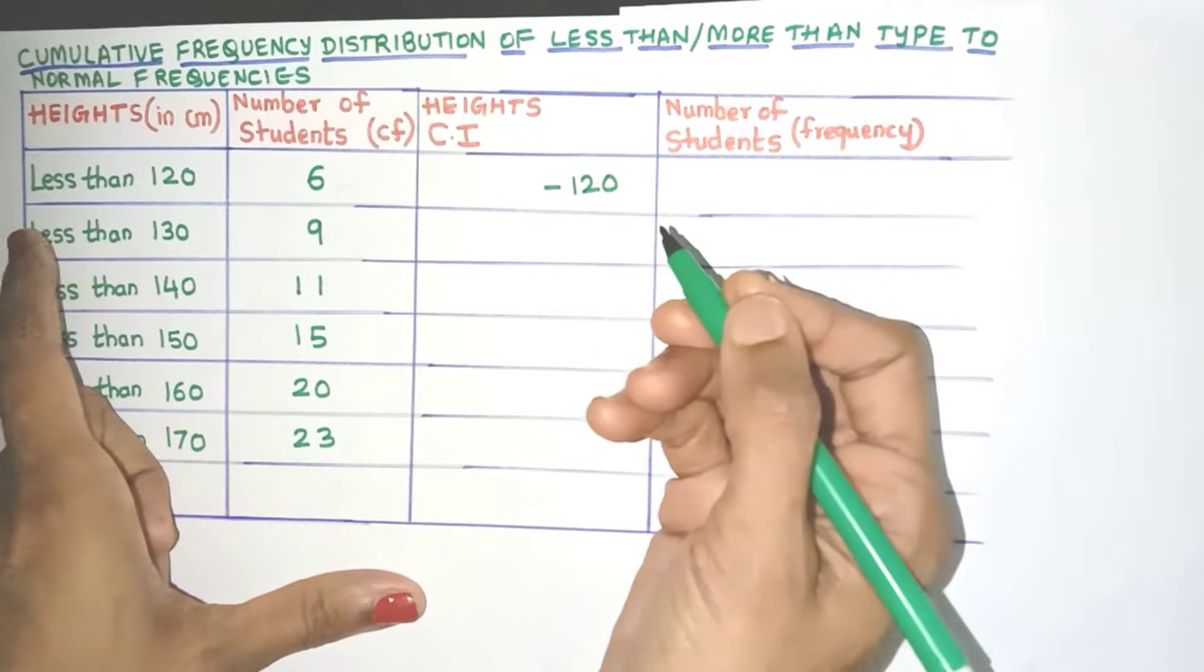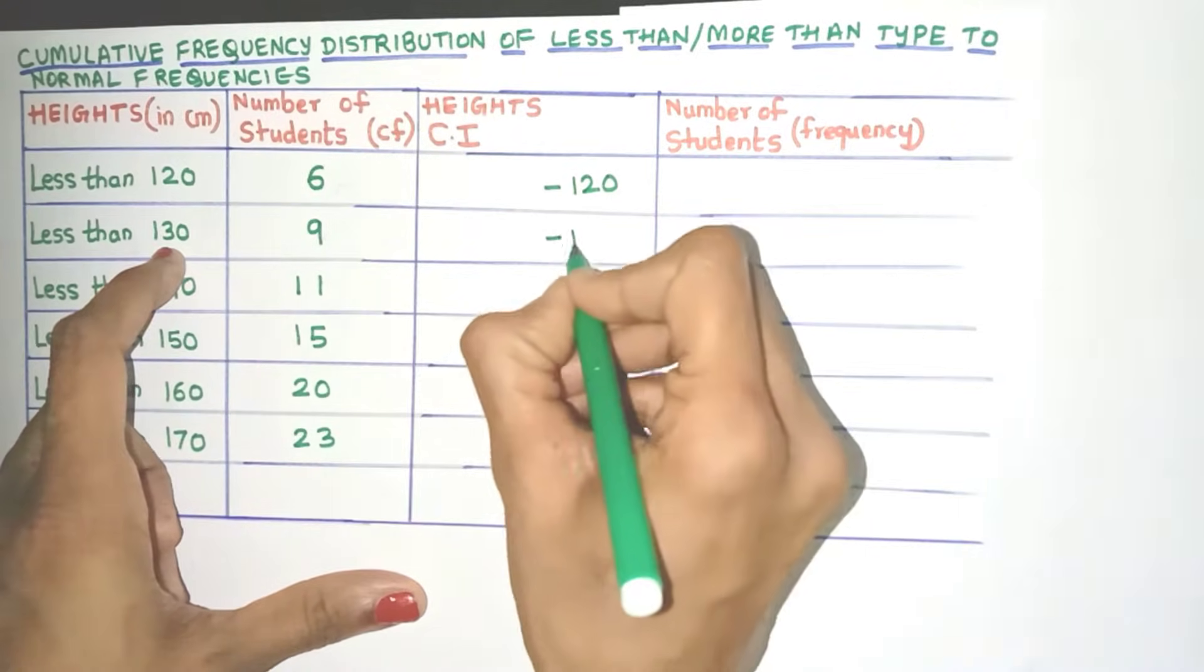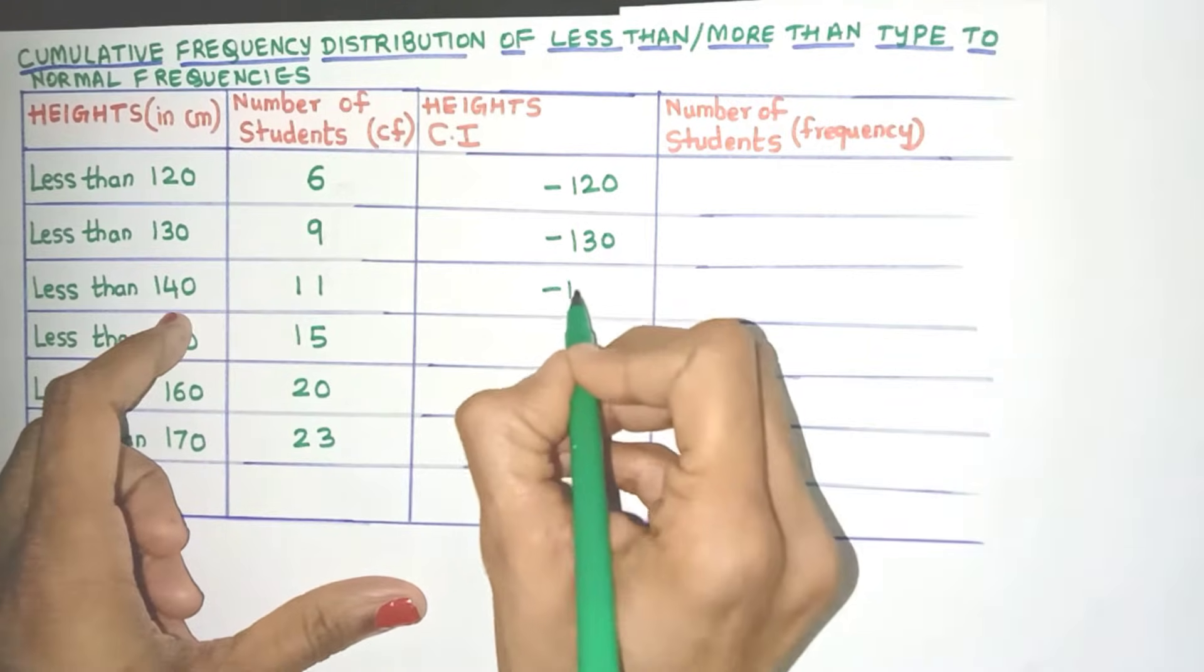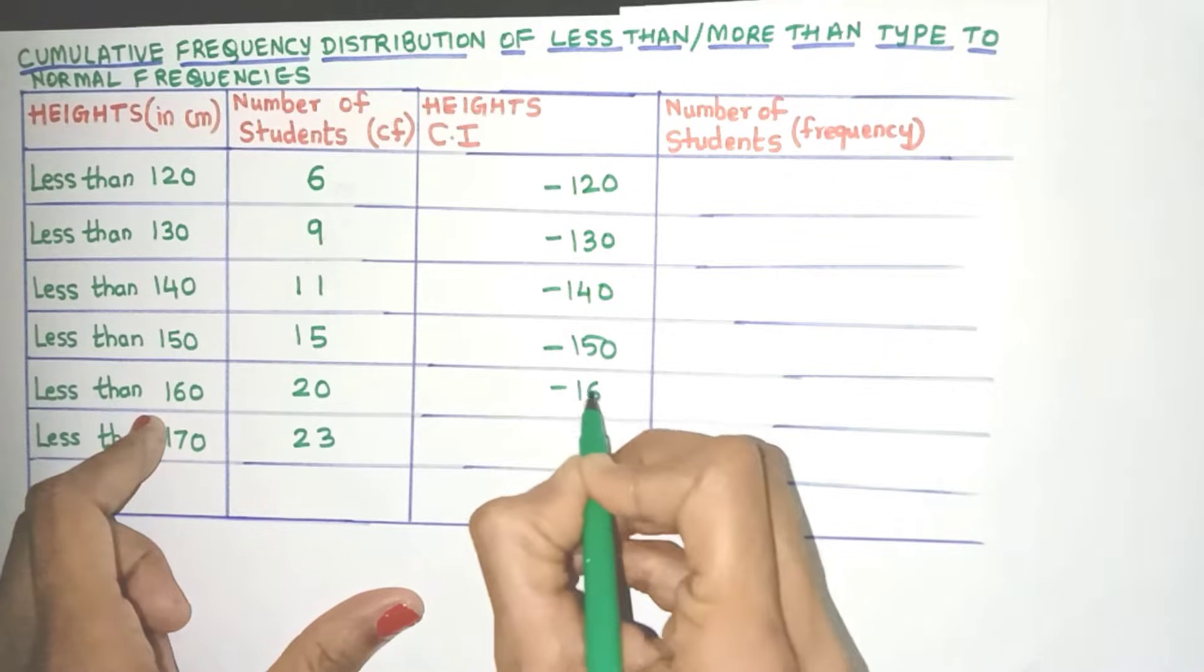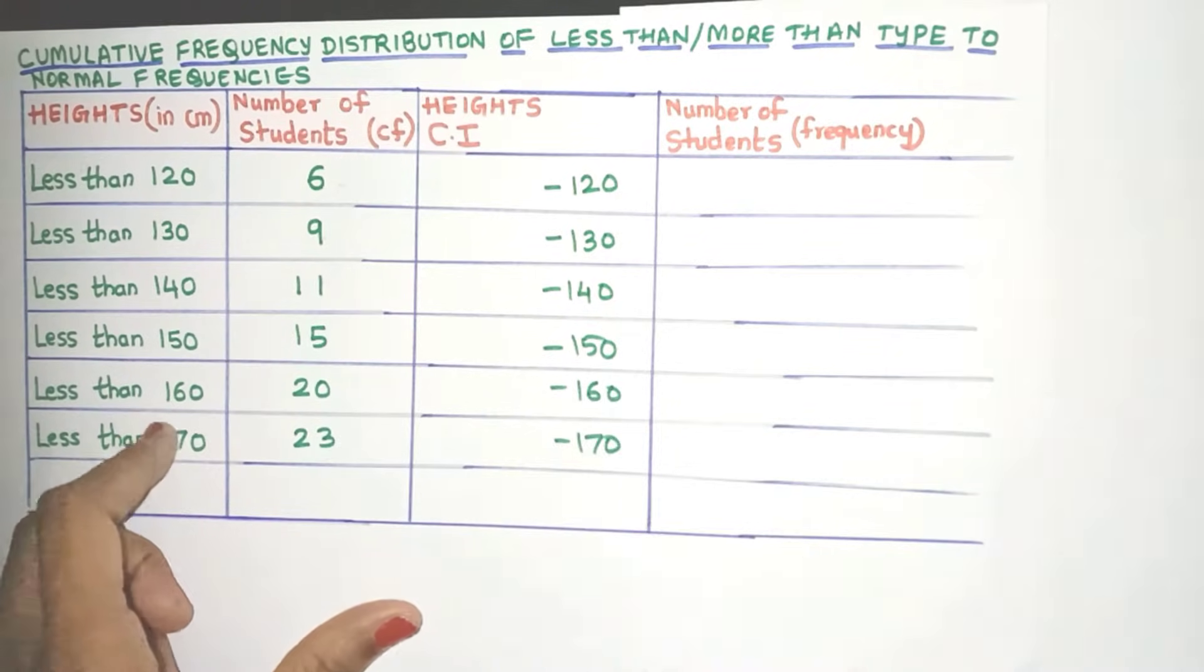Similarly, see here friends, less than 130. So definitely it will be 130 here, the upper limit and that way I can fill in all the rows. Okay. So these are all the upper class limits.